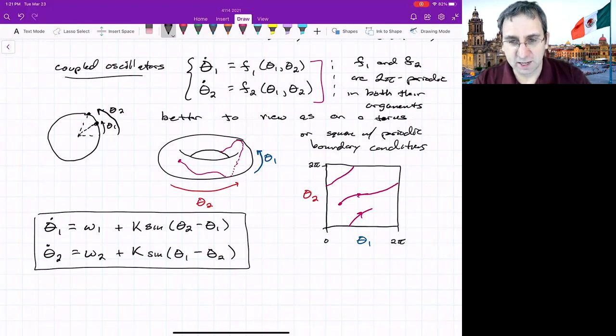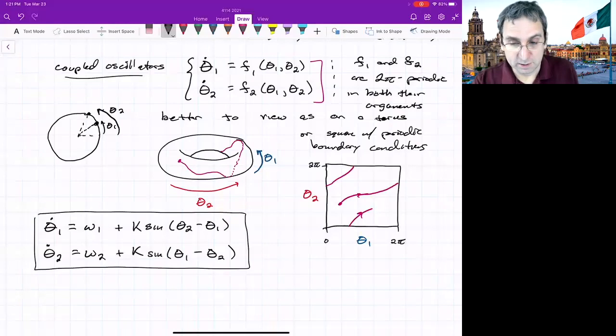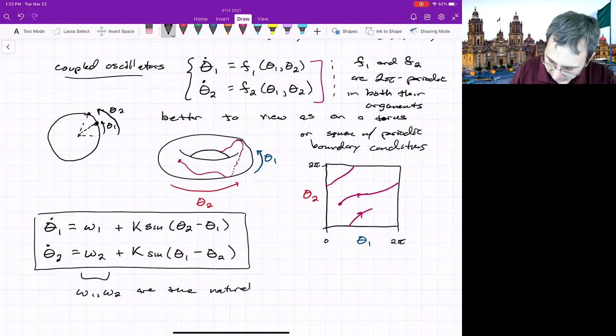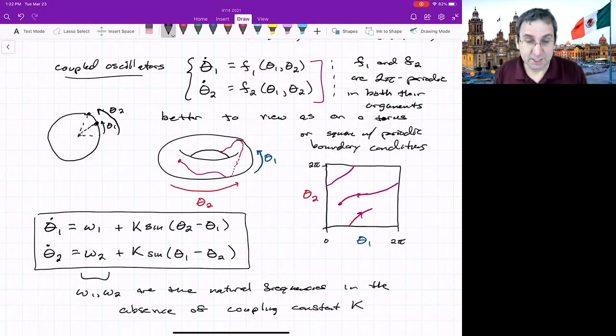So this is a simple model for oscillators. If you have two oscillators that interact in some way, then k would be non-zero. If k is zero, then you have two uncoupled oscillators. This is what we're going to consider. The omega one and omega two are, in some sense, the natural frequencies in the absence of a coupling constant. And k.